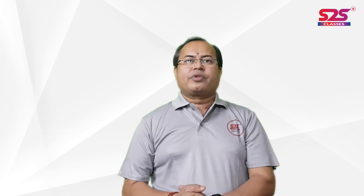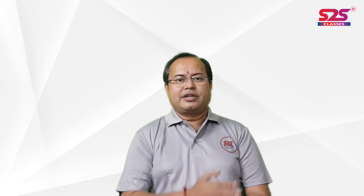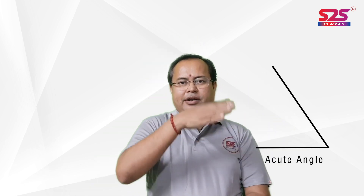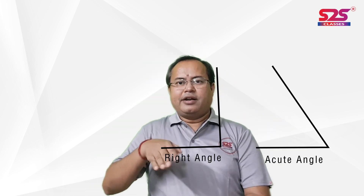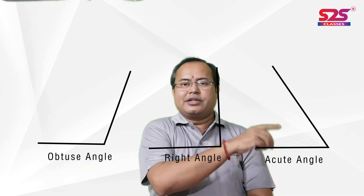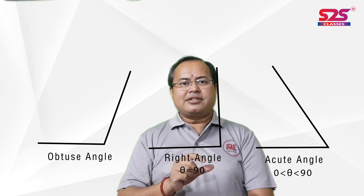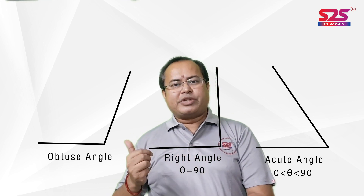Now we have to classify the triangles. Triangles can be classified as per their sides and their angles. First, take the case of angles. We know there are three types of angles: acute angle, right angle, and obtuse angle. In an acute angle, the angle is between 0 to 90 degrees. In a right angle, the angle is exactly 90 degrees.